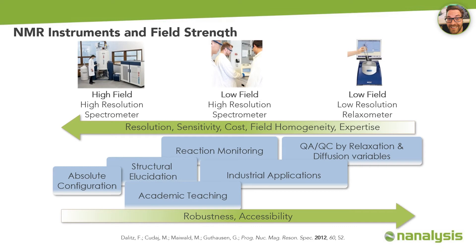How can benchtop NMR be classified and what can you expect from it? Low-field, high-resolution benchtop NMR spectrometers add another layer of NMR technology, filling the gap between relaxometers and high-field NMR spectrometers. While resolution and sensitivity increase towards high-field instruments, so do cost and expertise level. Our vision of benchtop NMR spectroscopy is not to replace high-field NMR, but rather to bring this powerful analytical technique to applications and places where it hasn't been employed so far. It is affordable, accessible, and still features high resolution and sensitivity, making it ideal for industrial applications, reaction monitoring, structural elucidation, and academic teaching. Students can run their own samples right next to the fume hood, making NMR a fun technique to use.